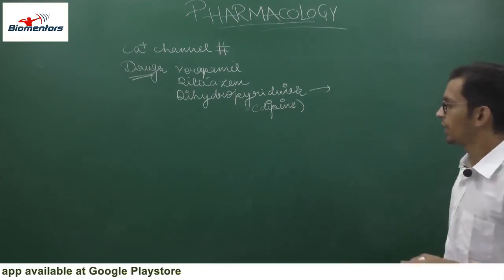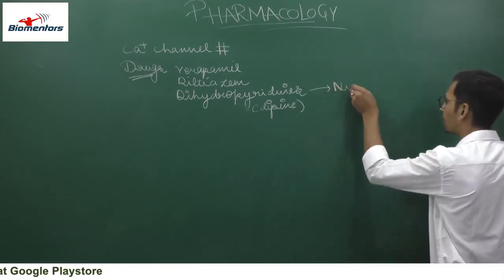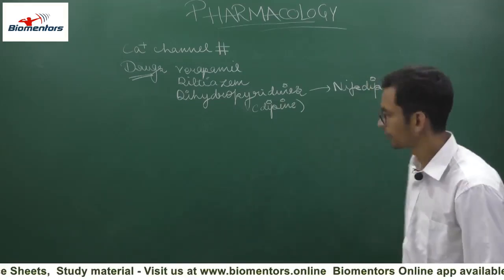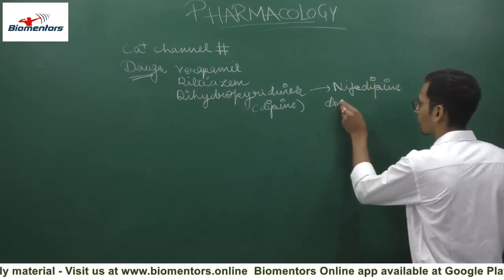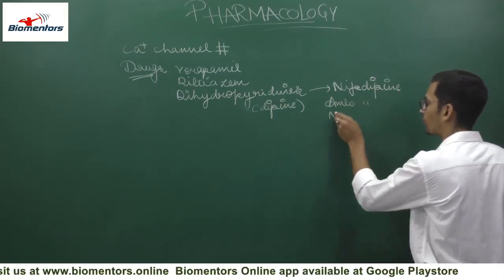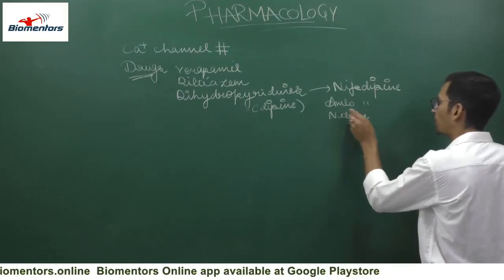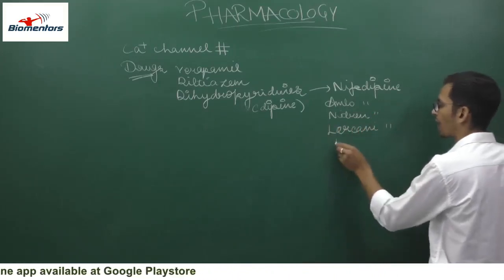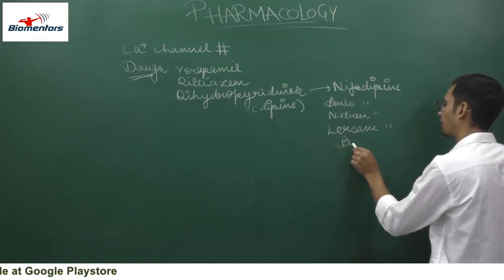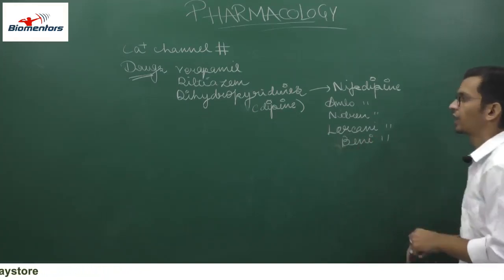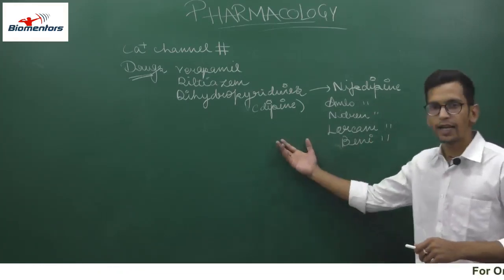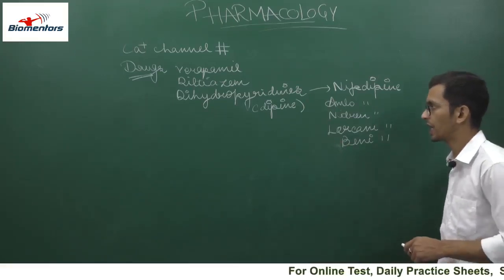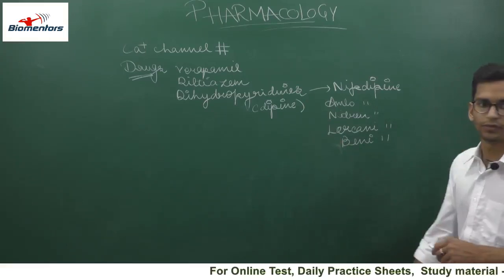In dihydropyridines we have drugs ending in '-dipine': nifedipine, amlodipine, nitrendipine, lacidipine, and benidipine. So the calcium channel blockers include verapamil, diltiazem, and the dihydropyridines.